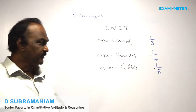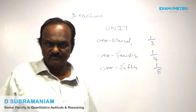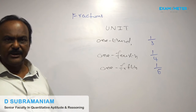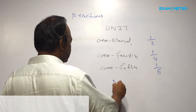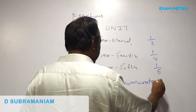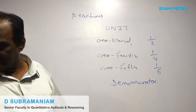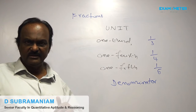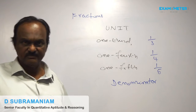The lower number — five, four, three — which indicates the number of equal parts into which the unit is divided, is called the denominator. Five, four, three — they are called denominators.